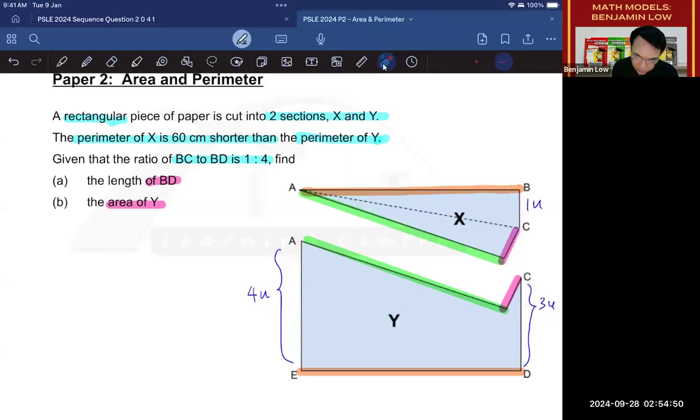And as you can see for Y, these two lines AE and CD have a total of 7 units. 4 here, 3 here, whereas BC is only 1 unit. And since the difference is 60, then 7 units minus 1 unit will give you 6 units, which is 60. So this is how you can do the question very quickly.